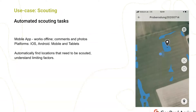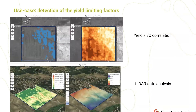Another use case is helping to automate scouting tasks. With Geopard, you need to go to fields much less frequently because we track vegetation changes. The logic is flexible — you can create your own rules for how you want us to generate tasks. Since we store, understand, and analyze many different data layers, we can really help you understand yield-limiting factors for your field.